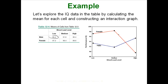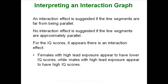If they deviate drastically enough from parallel, then there is an interaction. Looking at this graph, I would say these are not parallel — this last leg really messes with things and I would think there is an interaction. An interaction effect is suggested if the line segments are far from being parallel, though 'far from parallel' is a subjective thing. No interaction is suggested if the line segments are approximately parallel. From our graph it definitely appears that there is an interaction effect.